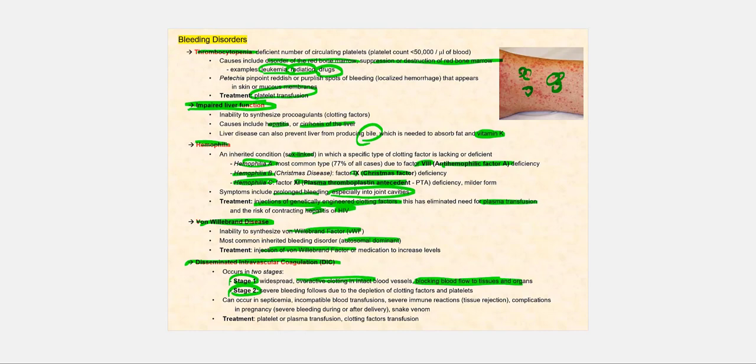The next stage involves severe bleeding. The reason is because we're forming widespread clots in intact blood vessels, which will then use up the clotting factors and as well as the platelets, to where now, when we have to form a blood clot, we're unable to. This can occur with septicemia or blood poisoning.